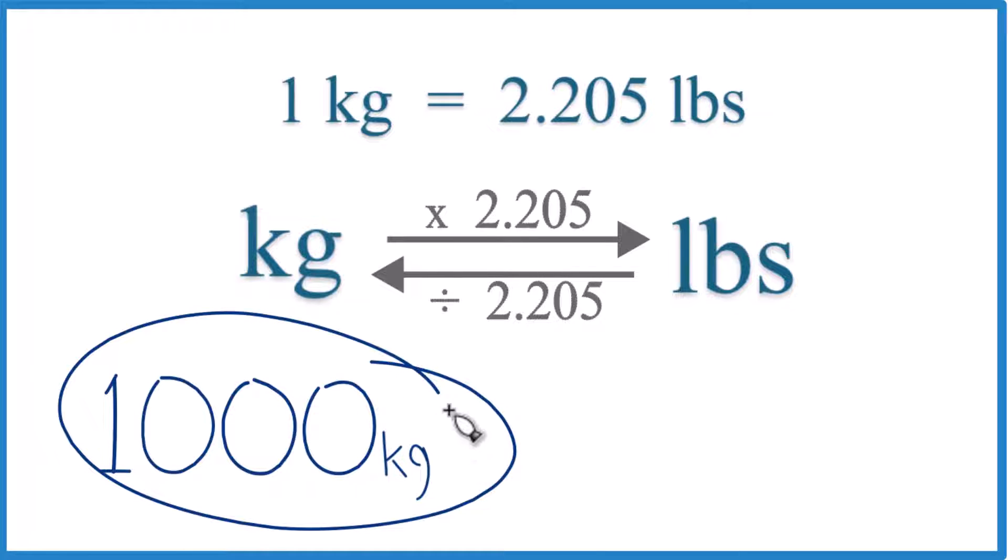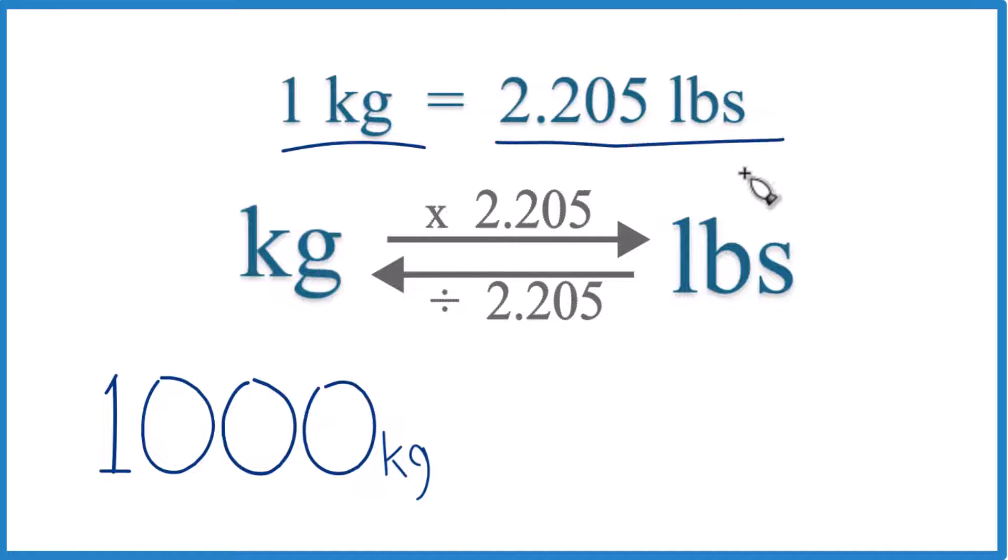Let's convert a thousand kilograms to pounds. Here's how you do it. One kilogram equals 2.205 pounds.